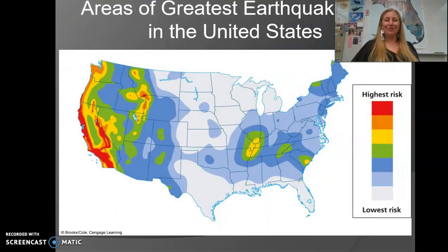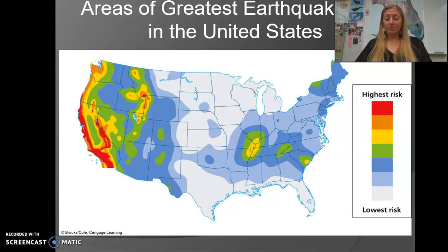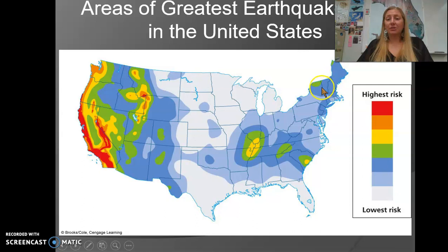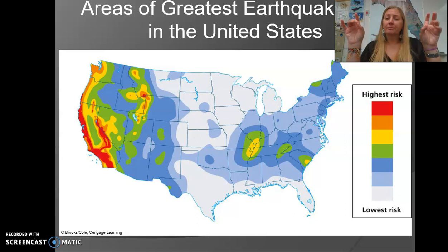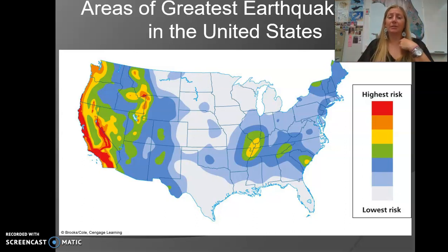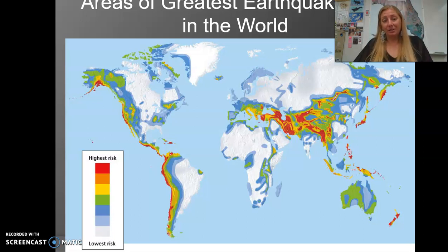Just a little map showing earthquake risk in the United States. In the western United States you've got the transform boundary of the San Andreas Fault in California. Up in northwestern Washington state is where you have a convergent plate boundary between the Juan de Fuca plate and the North American plate. Over in the eastern United States, these are areas not near a plate boundary but where you have plate weaknesses, so you can get a little bit of earthquake activity. And around the world, the plate boundaries correspond to where you have the greatest earthquake risk.